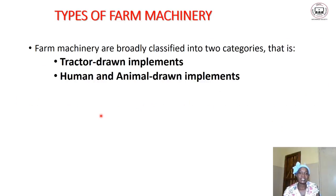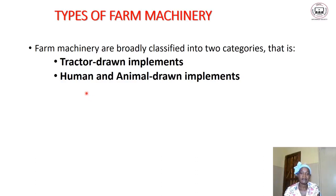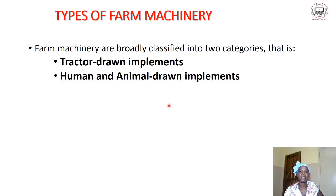Farm machinery can broadly be classified into two categories: tractor-drawn implements, as well as human or animal-drawn implements. The machines which we use in the farm can mainly be categorized into these two groups — tractor-drawn implements and human or animal-drawn implements.